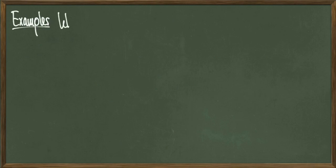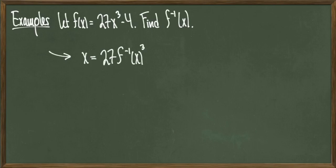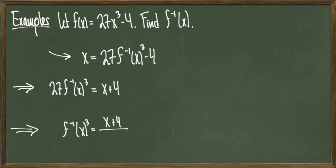For our next example, let f of x equal 27x cubed minus 4, and then we'll find f inverse of x. We're going to do it the exact same way we did in the previous slide. By replacing f of x with x, and by replacing x with f inverse of x, I get that x is equal to 27f inverse of x cubed minus 4. As I simplify, I get 27f inverse of x cubed equals x plus 4, which tells me that f inverse of x cubed equals x plus 4 over 27.